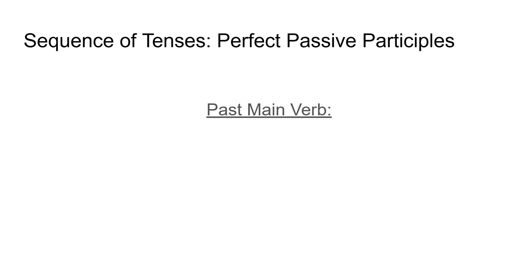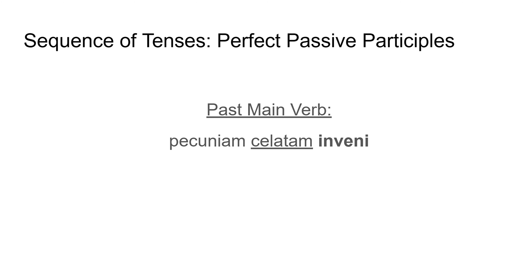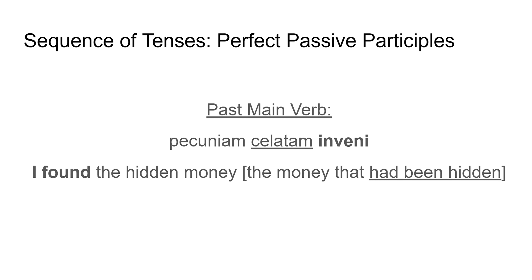If I have a past main verb, then I have 'pecuniam celatam inveni'. In this case it's a perfect main verb — but it doesn't matter which past tense it is. I have to take another step backwards, from my perfect main verb to a pluperfect perfect passive participle: 'I found the hidden money', or 'I found the money that had been hidden'. Pluperfect.